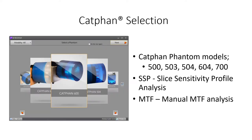The main application screen for AutoQA Plus displays all the CatPhan models supported along with selection options for SSP, size sensitivity profile, and a standalone MTF measurement function. The user selects a phantom and clicks next to advance. The screen can be disabled on startup, but if needed, can be accessed using the back button at the next screen.